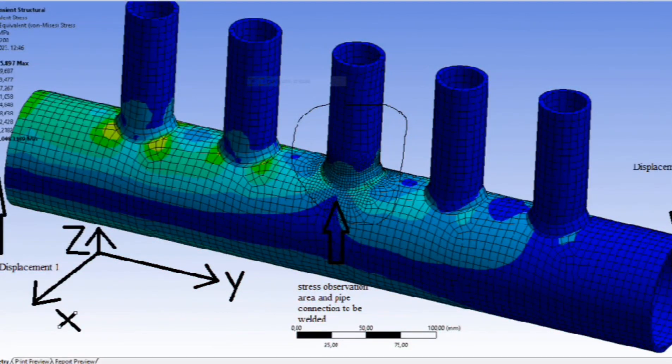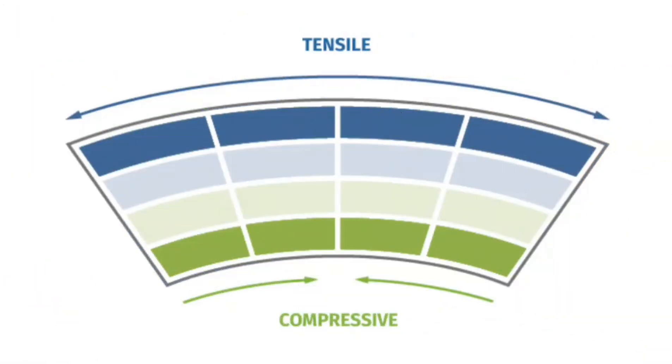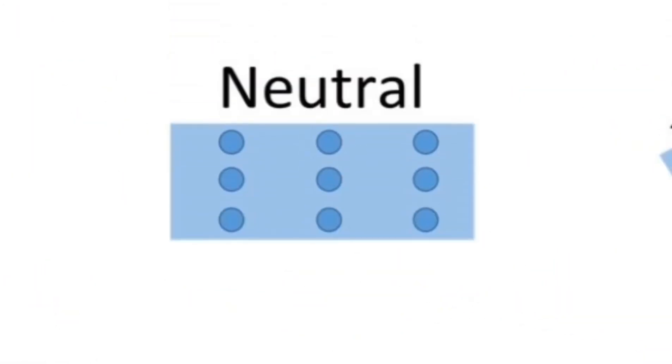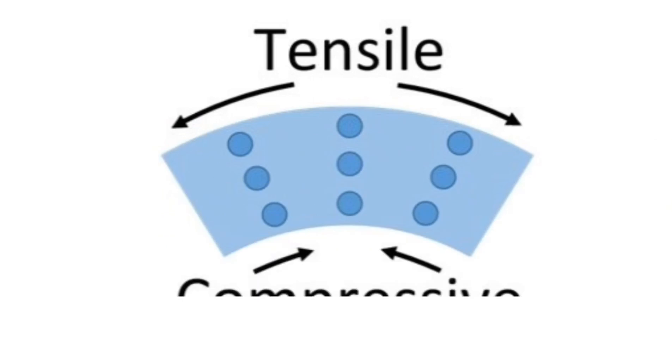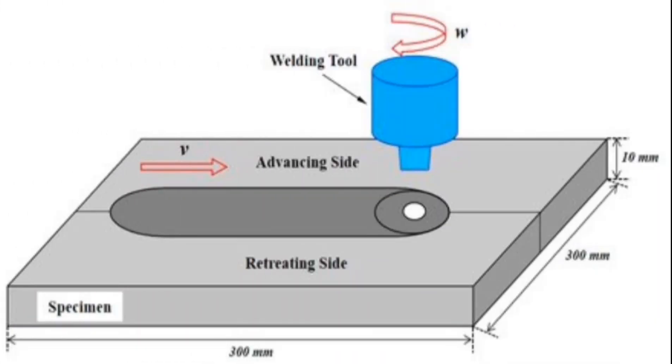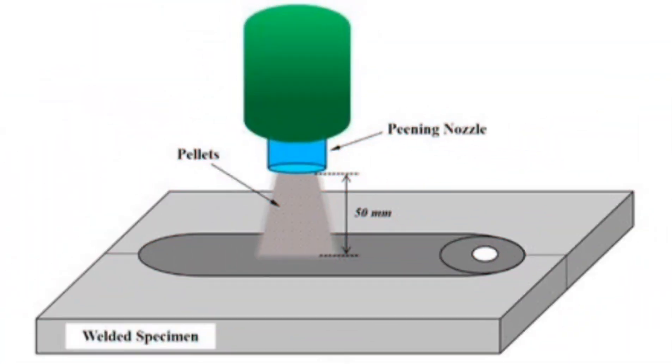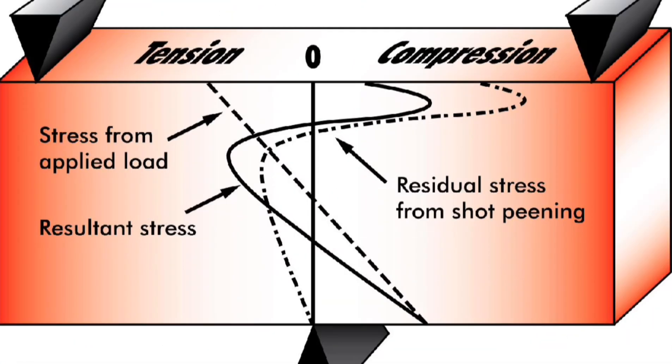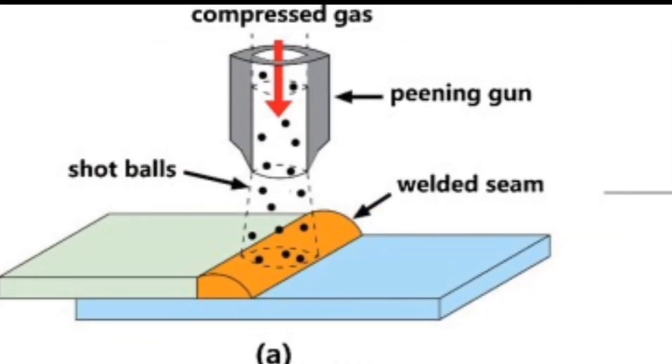How pinning reduces residual stresses: Residual stresses in weld structures are often tensile in nature, making the material prone to cracking and reduced fatigue life. Pinning introduces compressive stresses on the surface of the welded material. The mechanical forces applied during pinning induce plastic deformation in the material, transforming tensile stresses into compressive stresses near the surface.